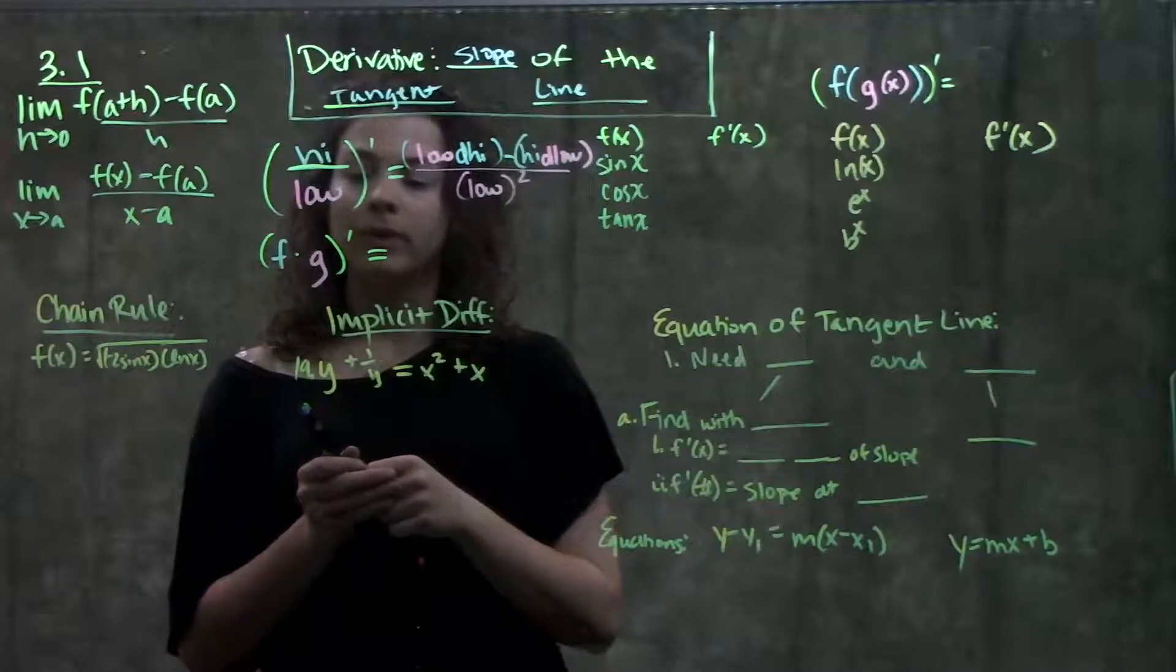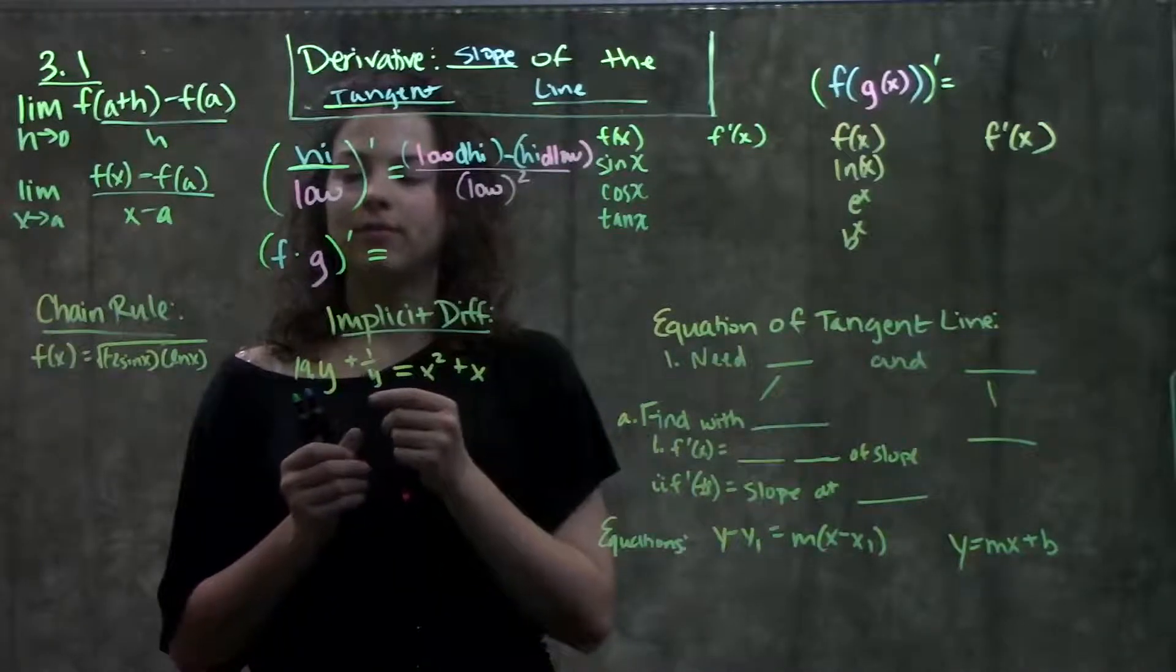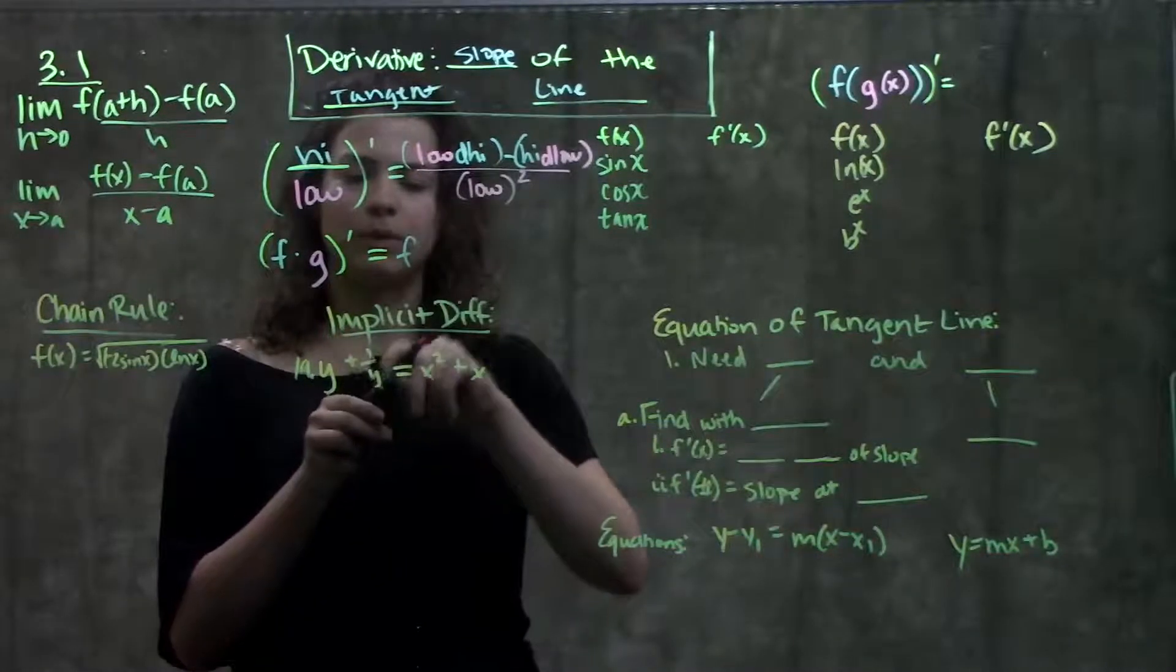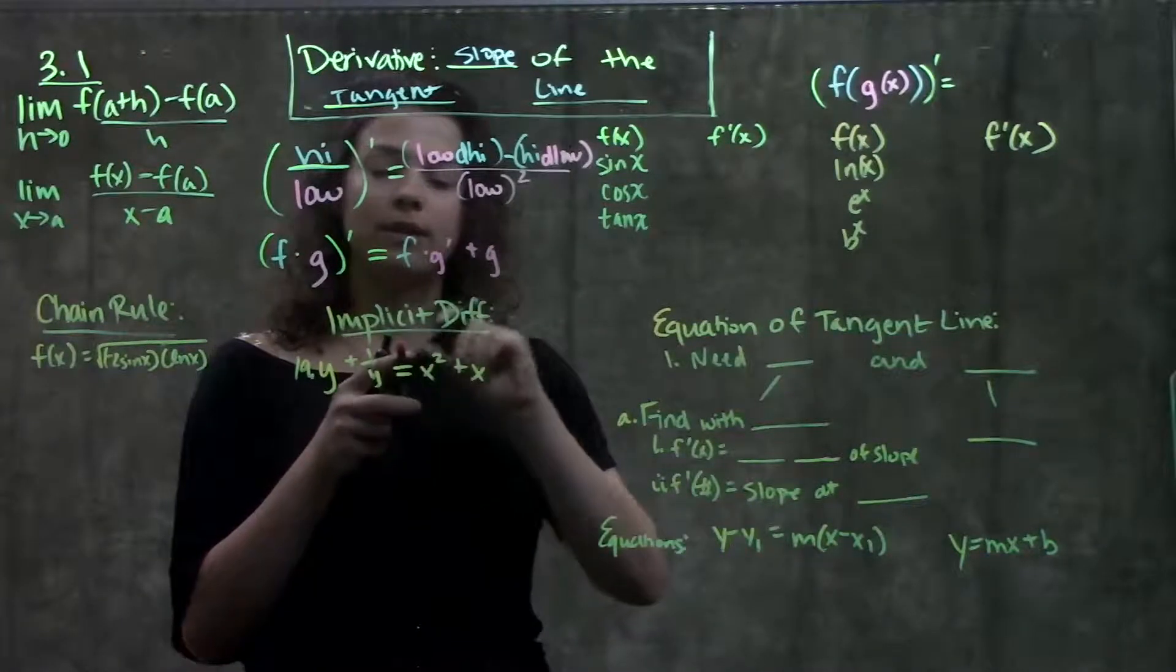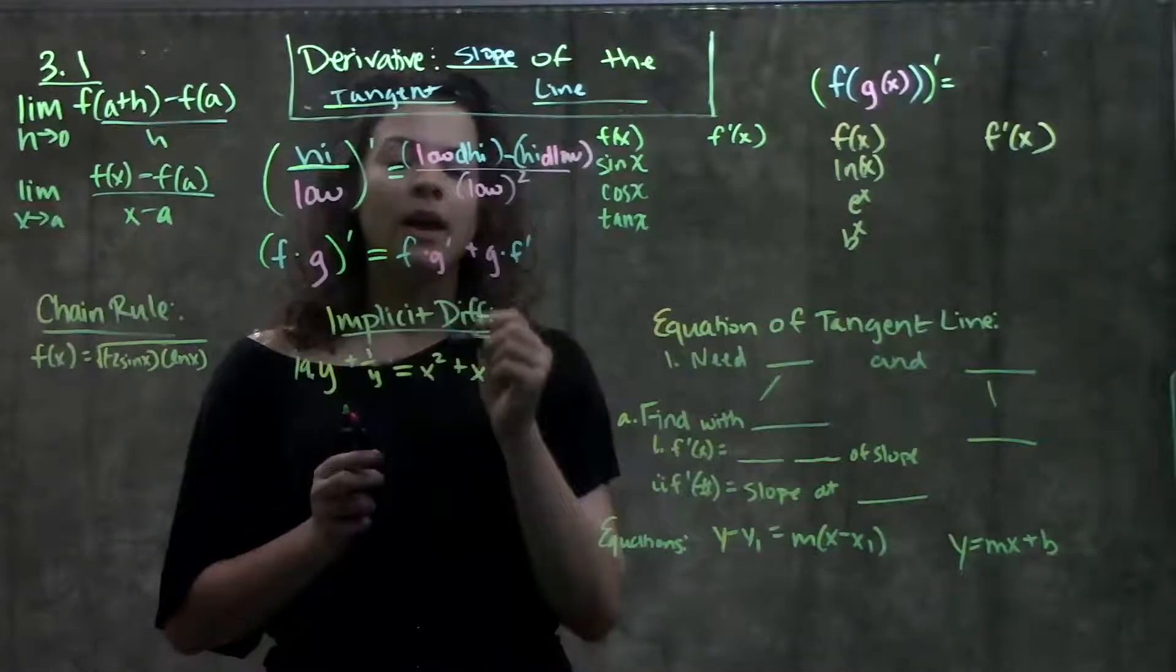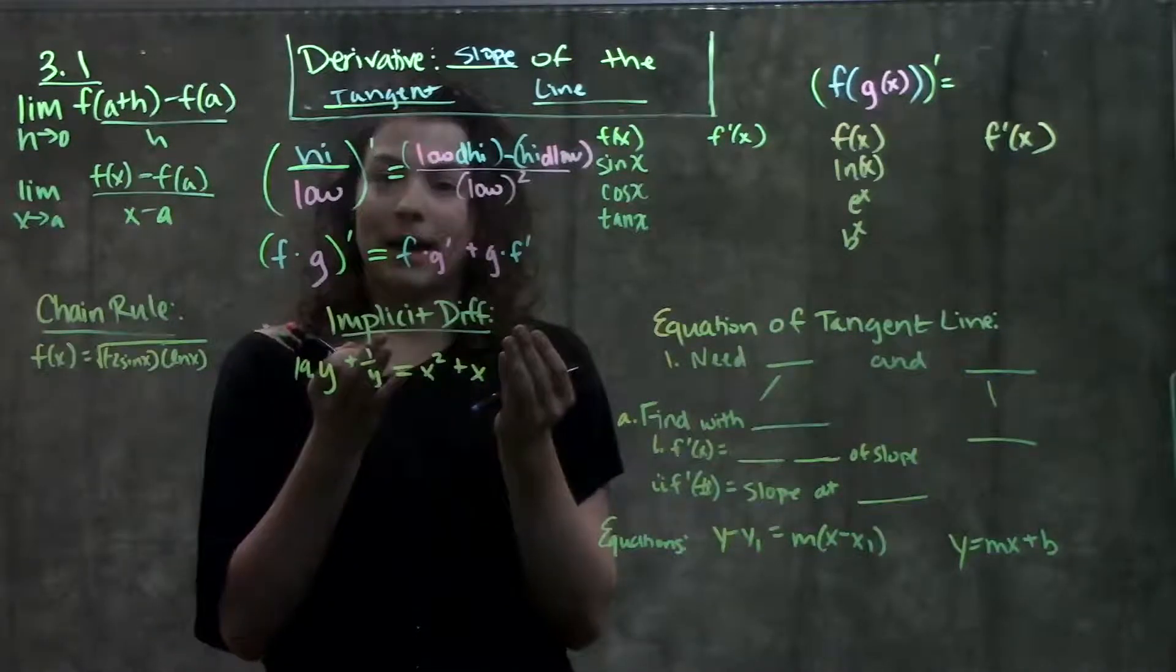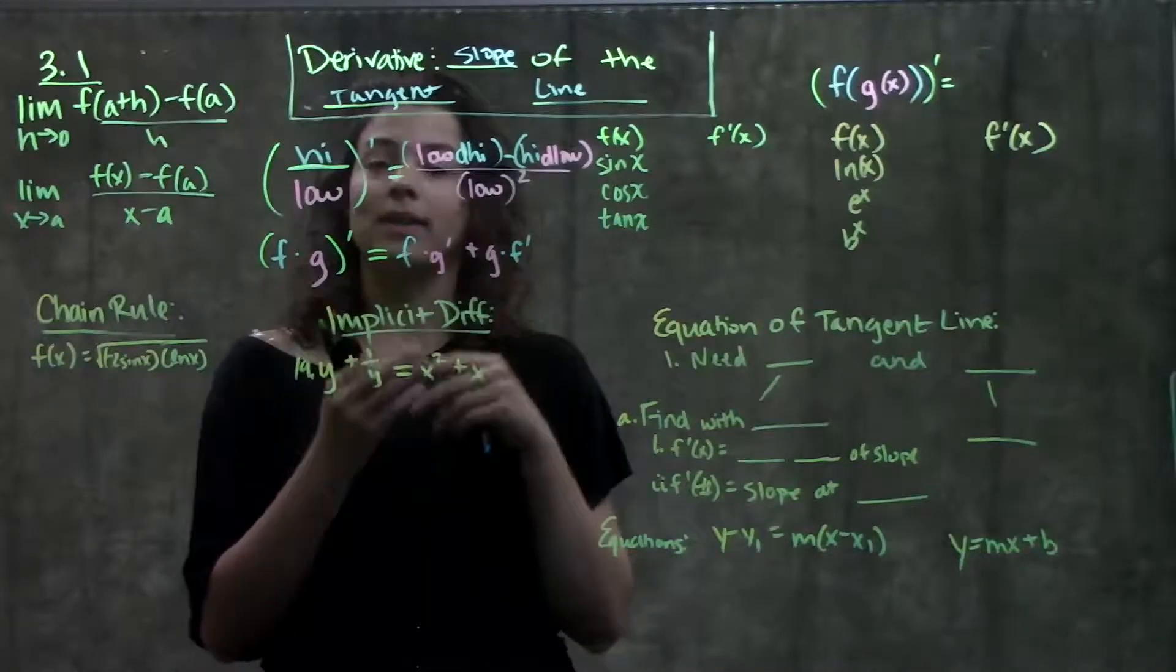Next rule is the product rule. That's if we have two functions being multiplied by each other, and we're taking their derivative. In this one, we take the first function times derivative of the second, plus second times derivative of the first. Now here, notice there's a plus sign in the middle. That means that our order doesn't matter here. I could label this one as my first one, or this one. Either way, I'll get the same answer.